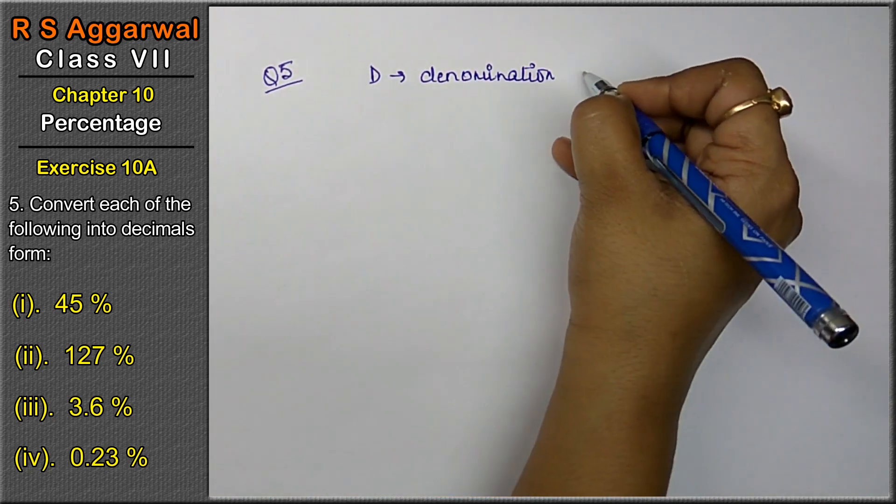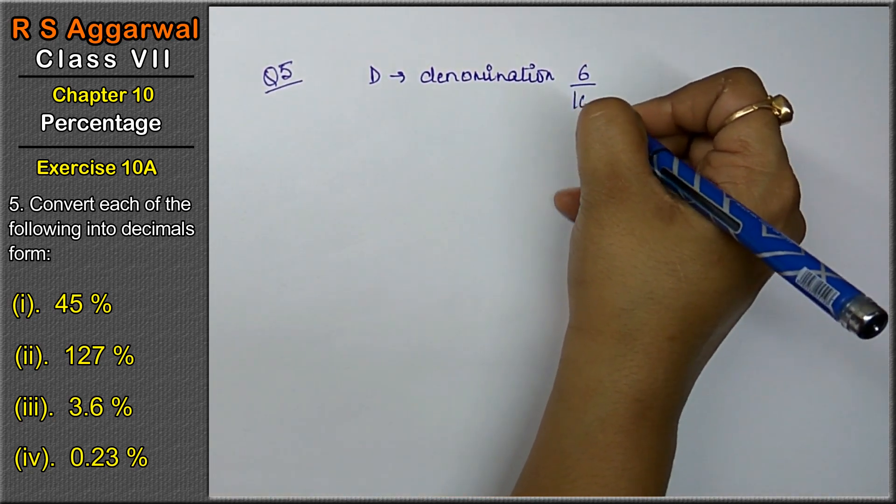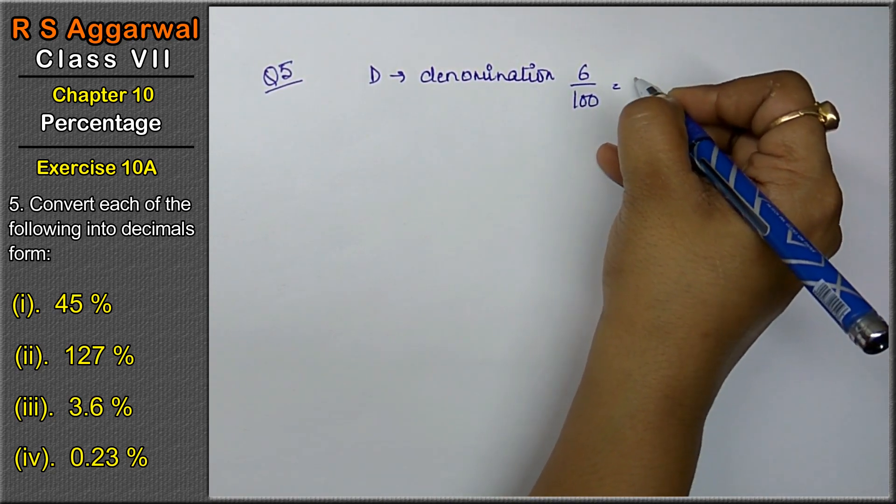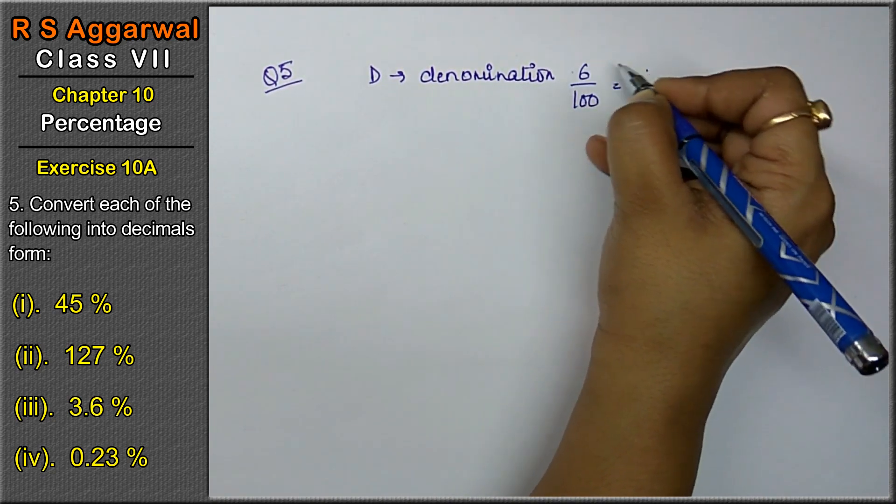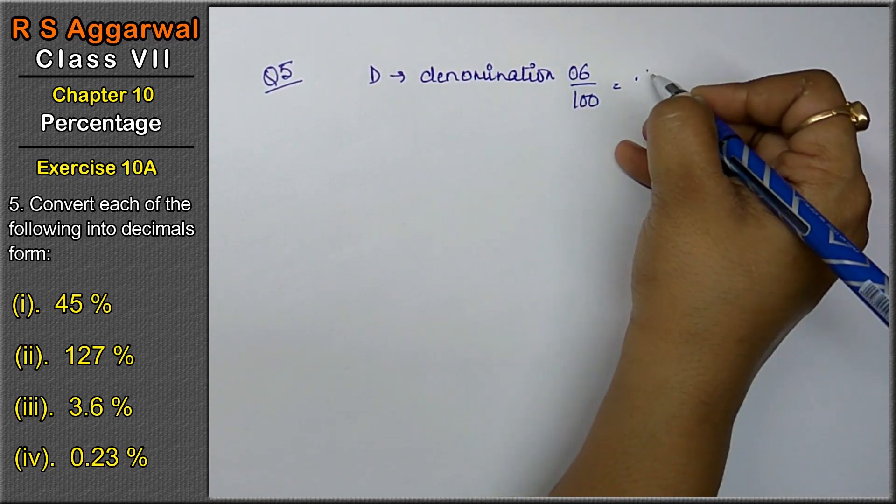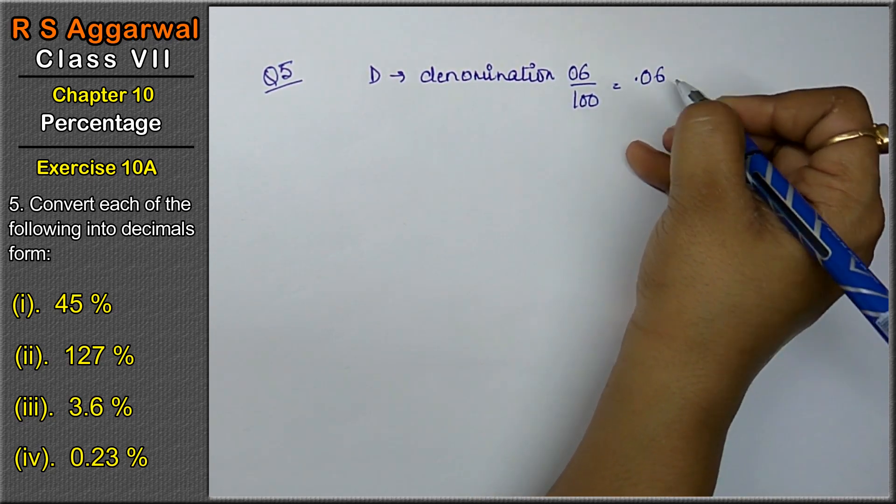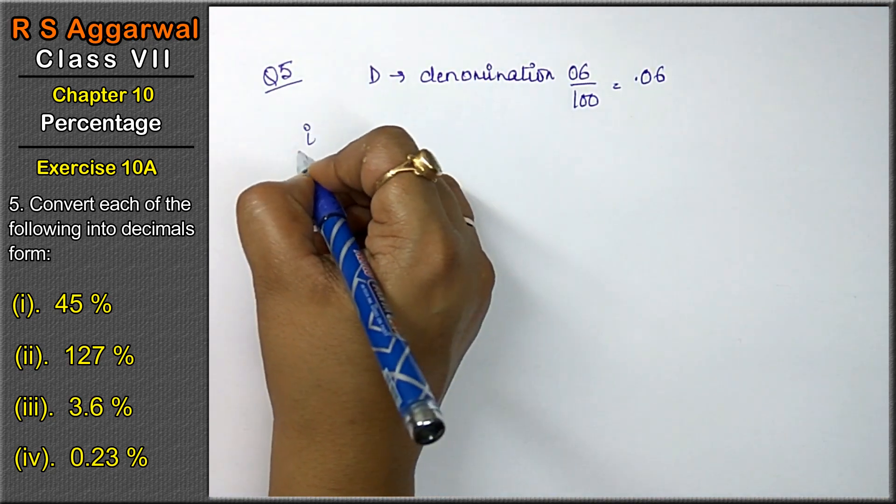Like 6 upon 100 has 2 zeros, so after those 2 zeros, that means nothing here so 0, 0.06 will be the answer. Let's see how.